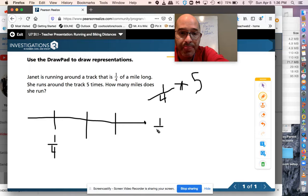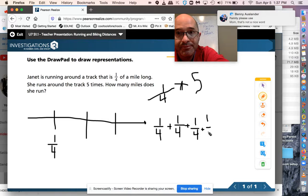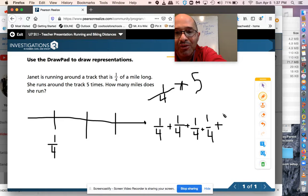One-fourth one time, plus one-fourth a second time, plus one-fourth a third time, plus one-fourth a fourth time, plus one-fourth a fifth time. Sorry, it's taking me a little while. I'm doing my best here. So we got one-fourth five times.